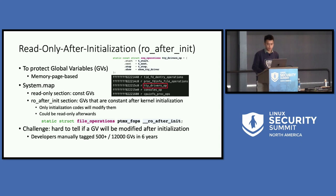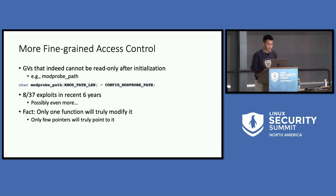RO after init is proposed to make such variables read-only just after kernel initialization. The challenge is that it's hard to tell if a global variable will be changed or not. Given the complex nature of the Linux kernel, it's hard to see where the address of a global variable flows to. It's also hard for developers to track global variables and confirm that changes only happen in the initialization stage. So after six years of this mechanism being proposed, only about 500 global variables have been manually tagged by developers.